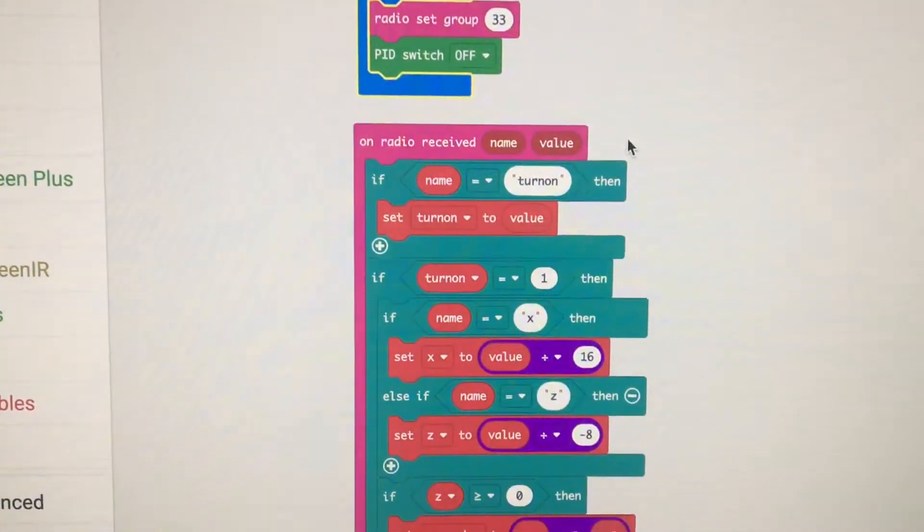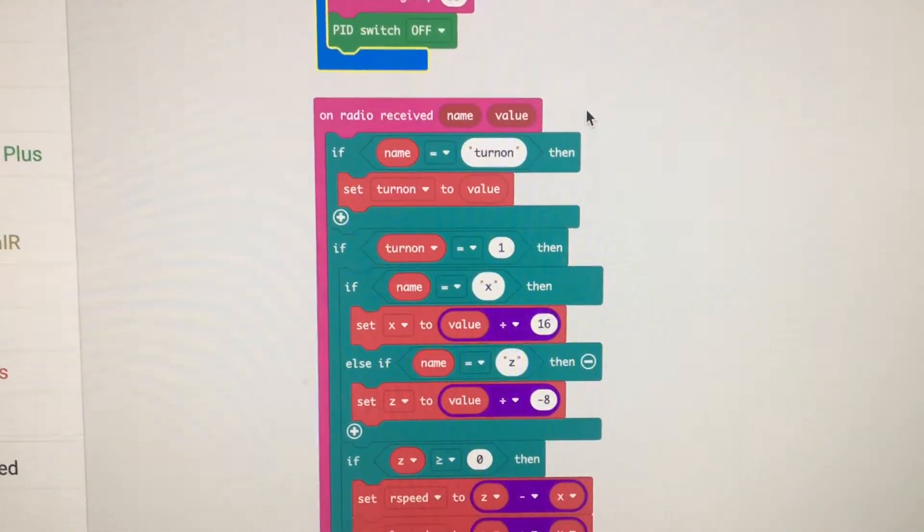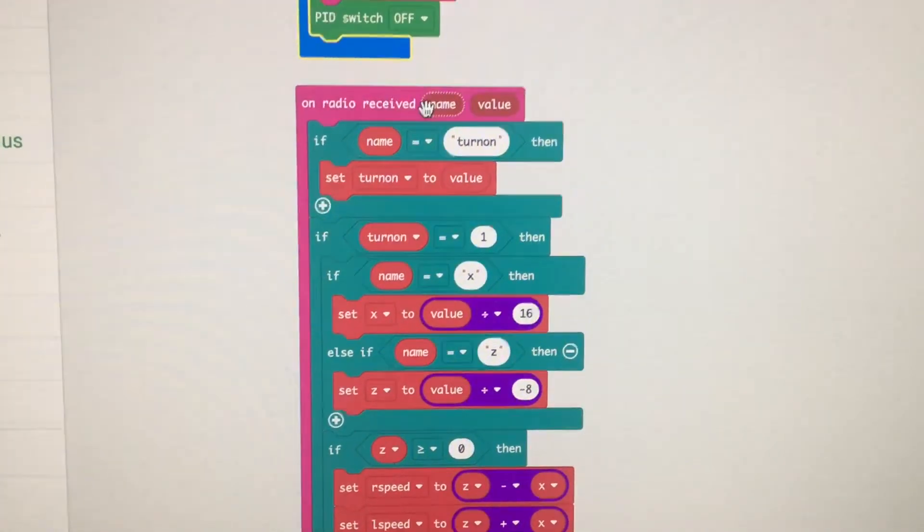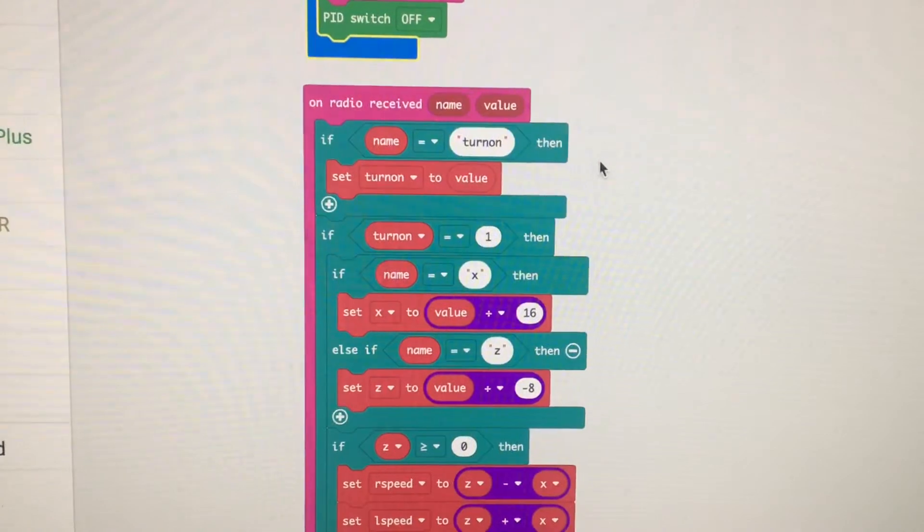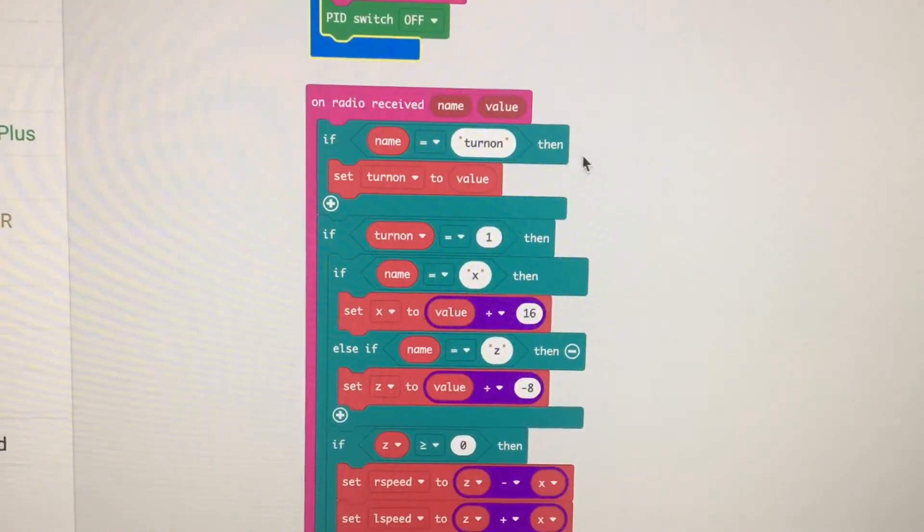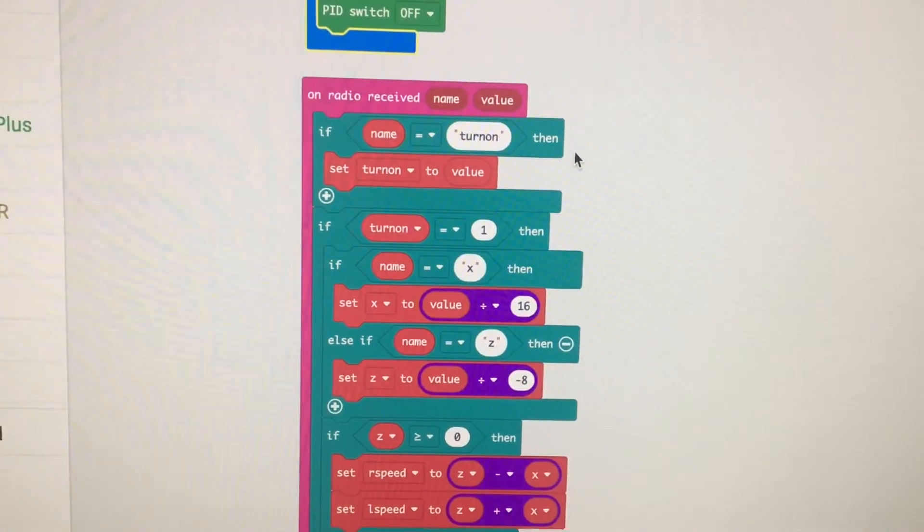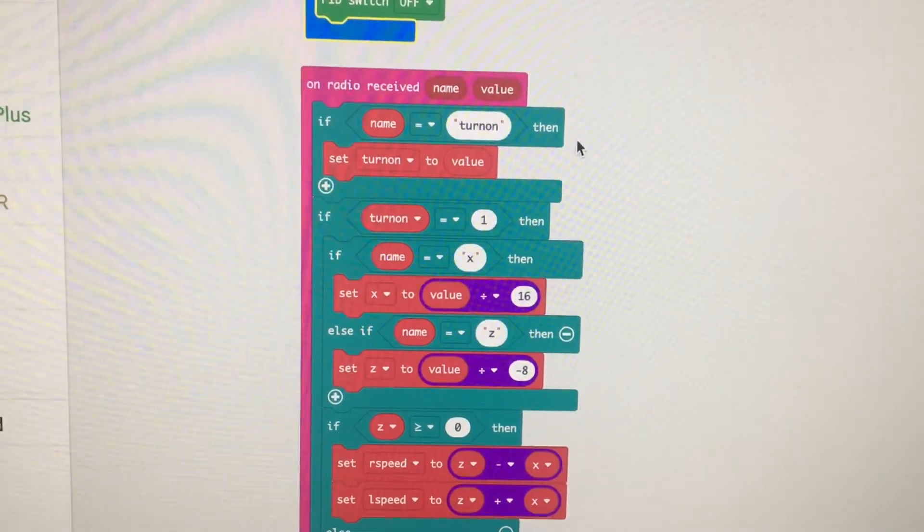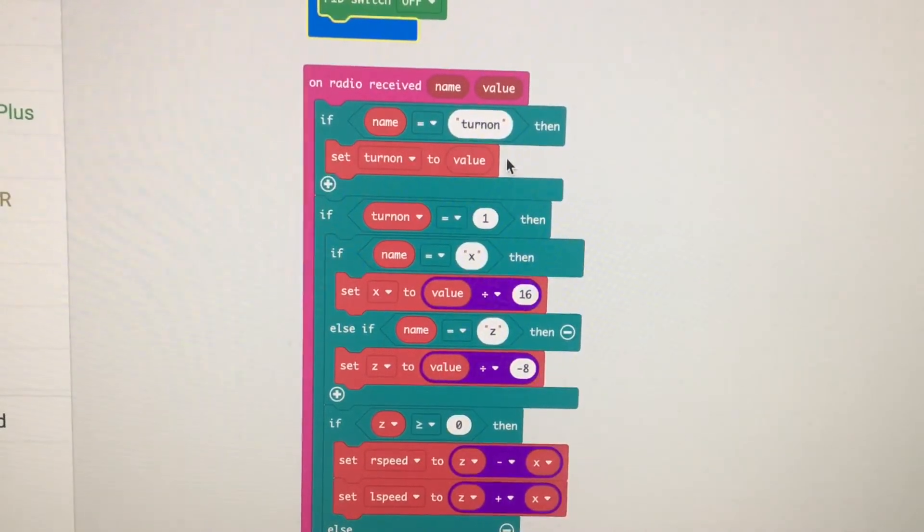And then I have the main loop which is just what to do when it receives a radio signal. So it receives the information as a name and a value. And if the name that it receives is turn on, if it receives a turn on command, then set the turn on variable to the value that's specified.